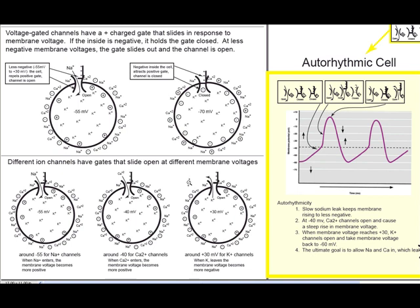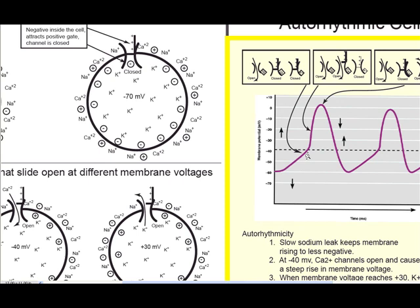These voltage-dependent channels open in a sequence called an action potential. We graph these sequences by putting time on the x-axis and membrane voltage on the y-axis. This is a bit different than what we talked about in A&P1, but you should be able to follow along. In this case, a channel opens up — specifically a sodium channel.